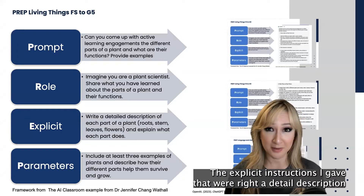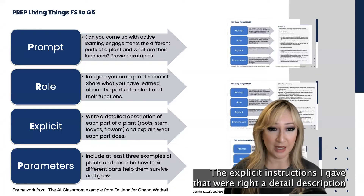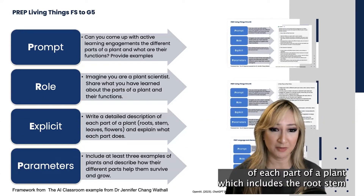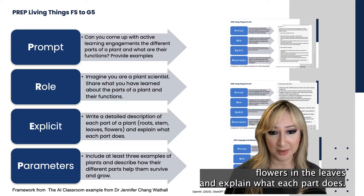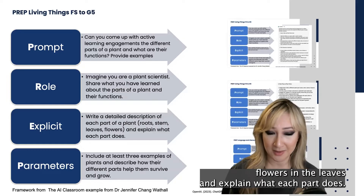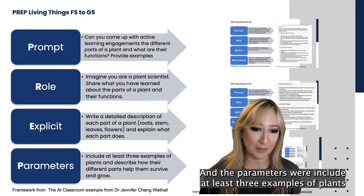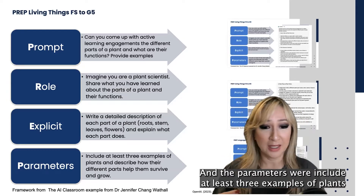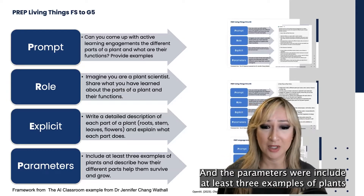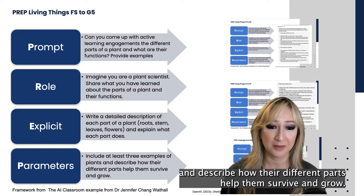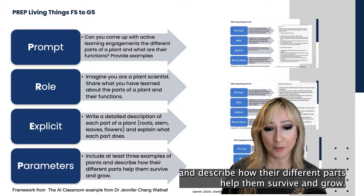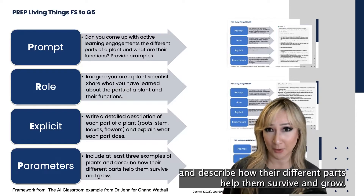The explicit instructions I gave were: write a detailed description of each part of a plant, which includes the roots, stem, flowers, and the leaves, and explain what each part does. The parameters were: include at least three examples of plants and describe how their different parts help them survive and grow.